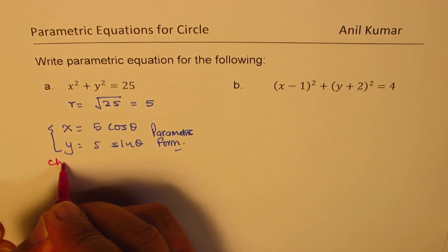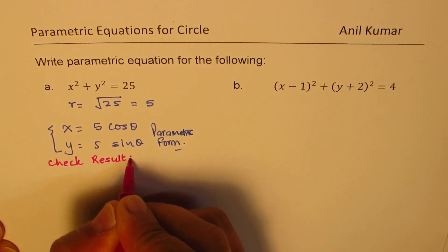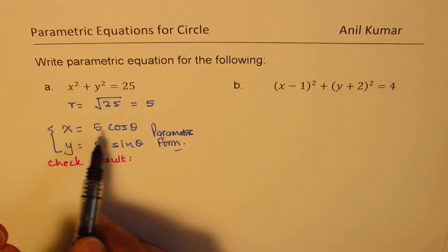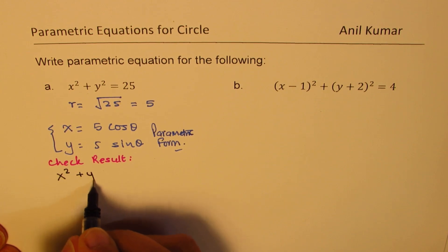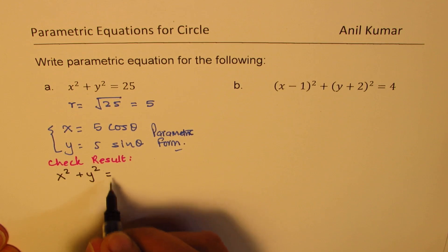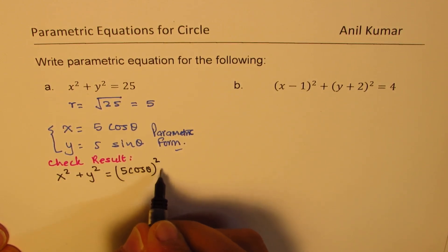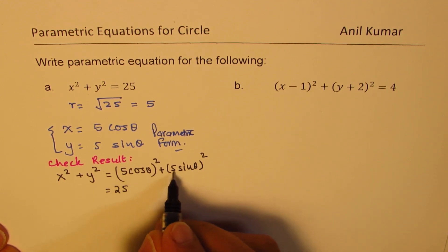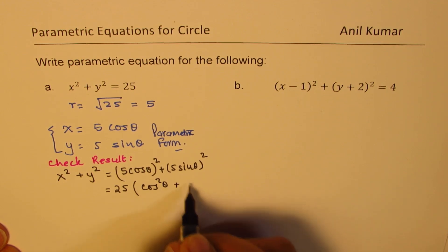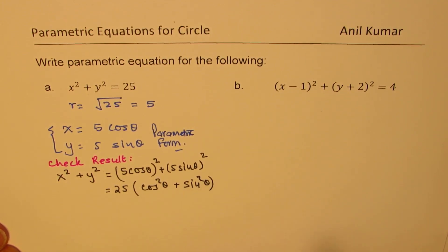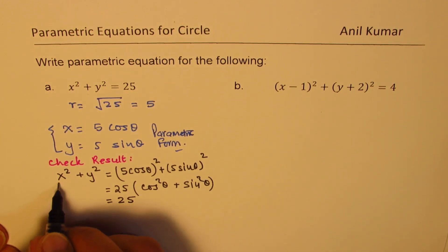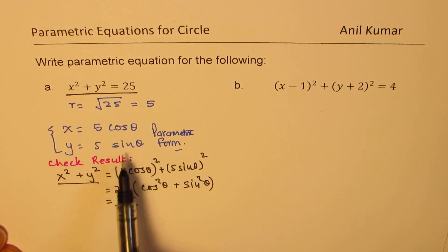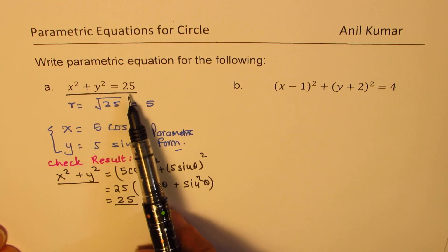It is a good time to check the result. We can do the reverse: substitute x squared plus y squared. x is 5 cos theta, so we get 5 cos theta whole square plus 5 sin theta whole square, which gives us 25 times cos squared theta plus sin squared theta. Since cos squared theta plus sin squared theta equals 1, this equals 25. So x equals 5 cos theta and y equals 5 sin theta correctly represents x squared plus y squared equals 25.